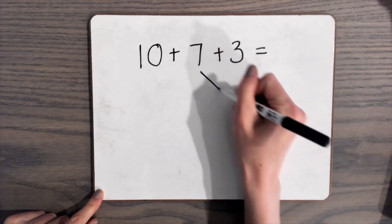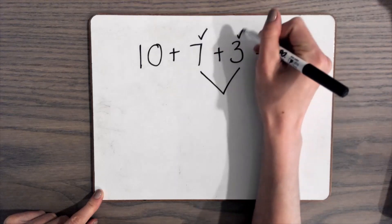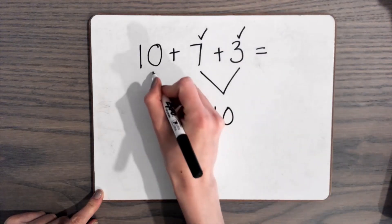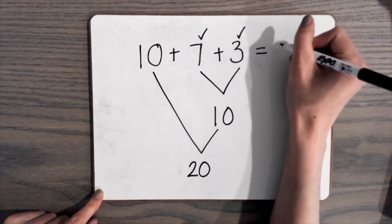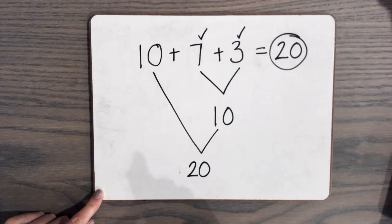I see that I have a 7 and a 3, and that is a combination of 10. So I'm going to add those first. So 7 plus 3 is 10, and then 10 plus 10 is 20. So our answer is 20.